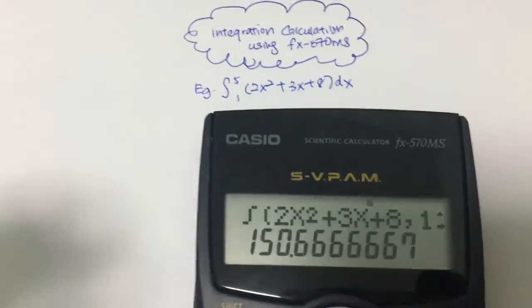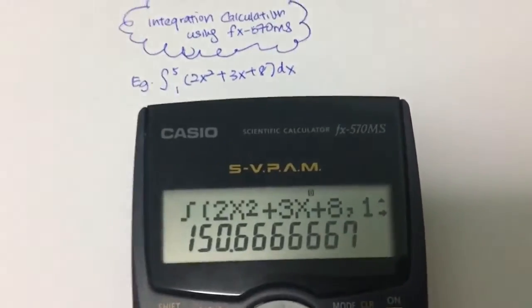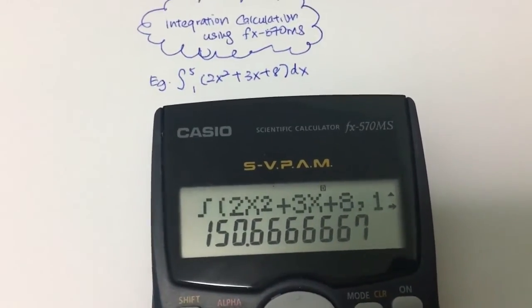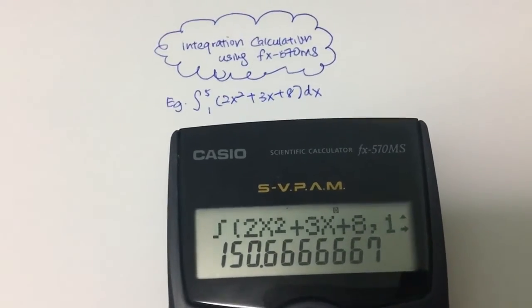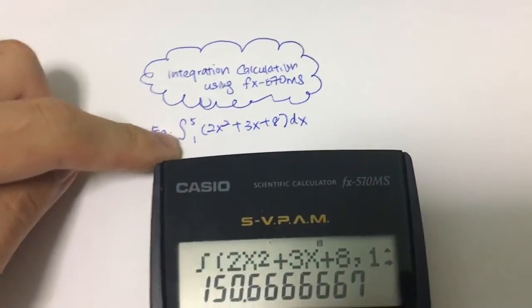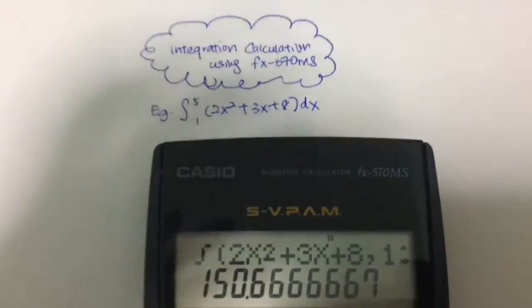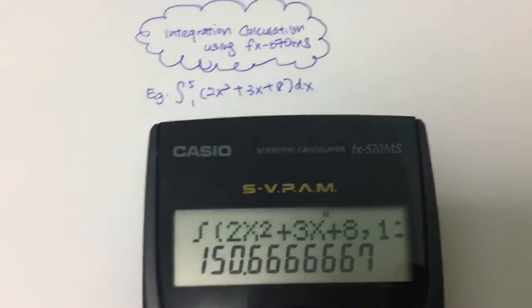And then you'll be able to calculate what is the integral of 2x² plus 3x plus 8 from the lower range 1 to 5. This is as simple as that. It is a very fast method for you to do.